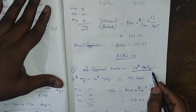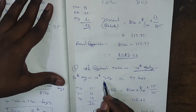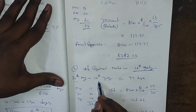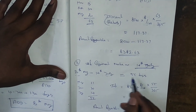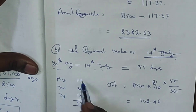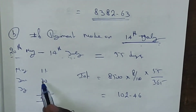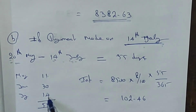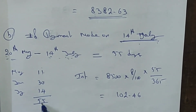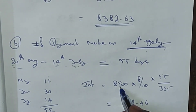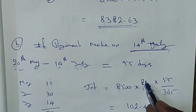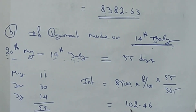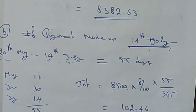The second preferred date is 14th July. Calculate the number of days between the Average Due Date (20th May) and 14th July: remaining days in May is 11 days, June is 30 days, July up to 14th is 14 days — total 55 days.